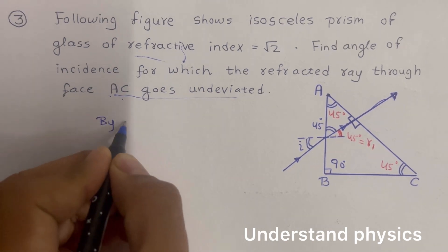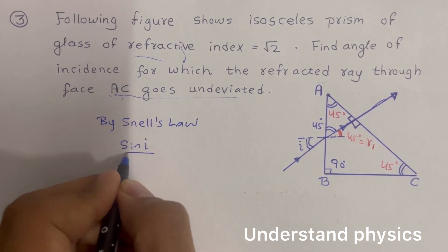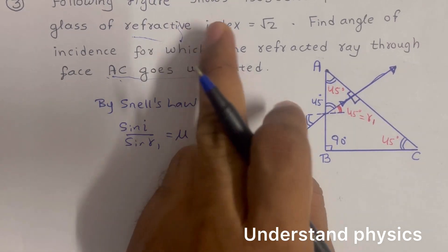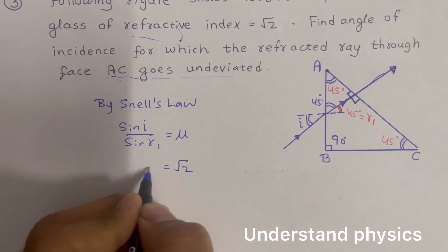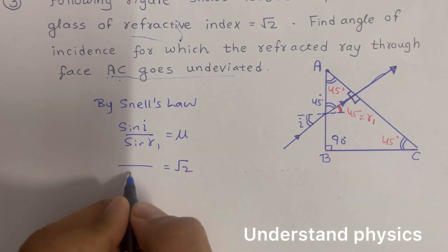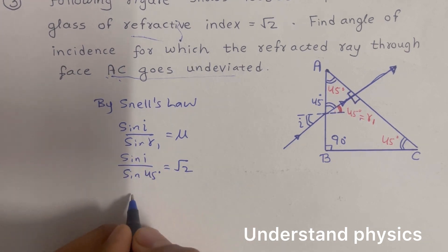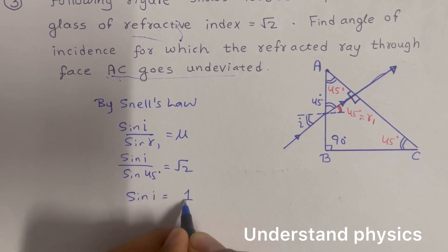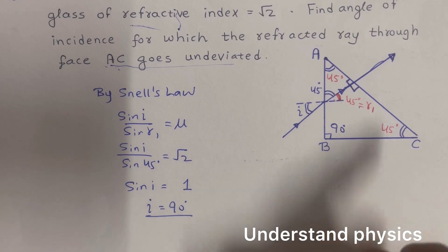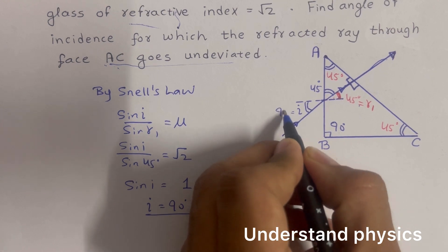Applying Snell's law: sine i divided by sine r1 equals mu, the refractive index of the prism, which is root 2. With r1 equal to 45 degrees, sine i equals root 2 times sine 45 equals root 2 times 1 over root 2, which equals 1. If sine i equals 1, then the angle of incidence i must be 90 degrees.